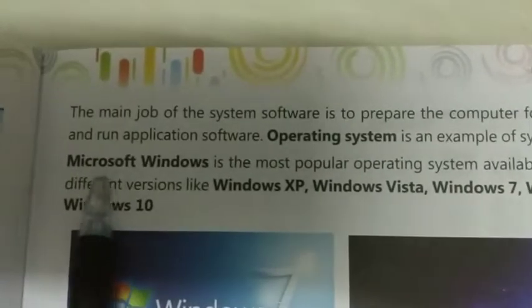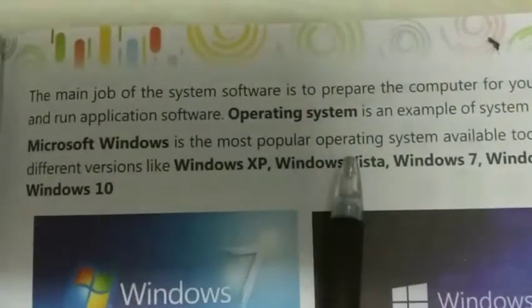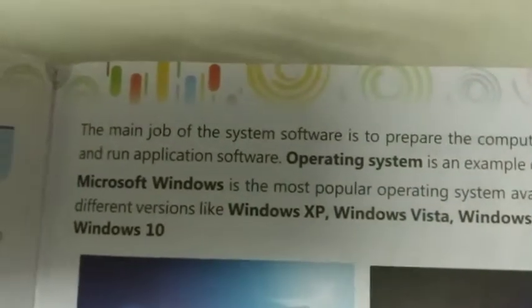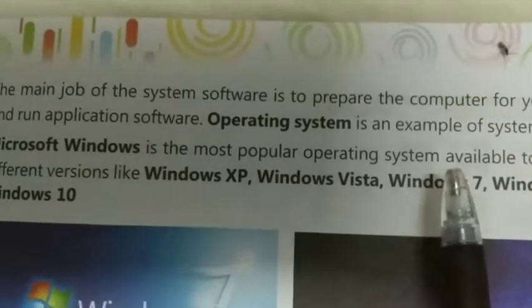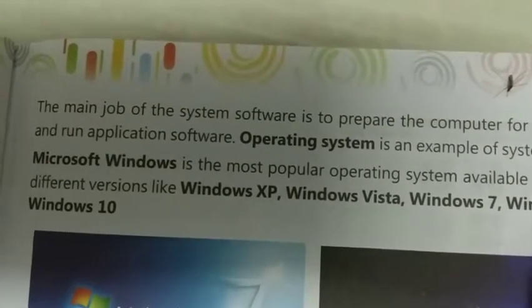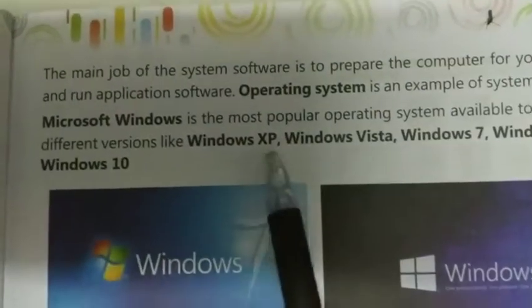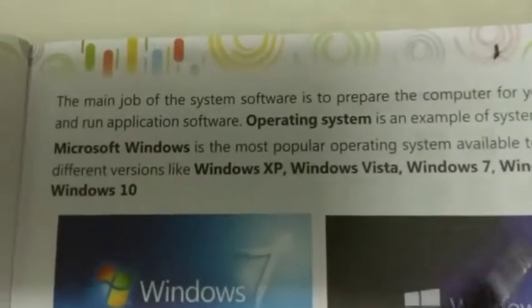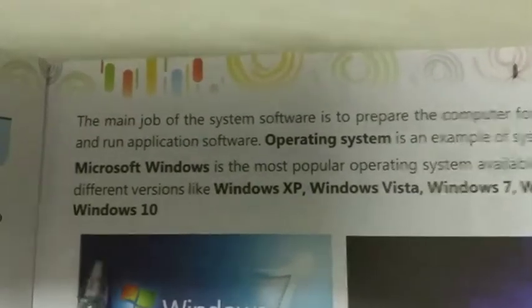Operating system क्या है? System software का एक example है। Microsoft Windows is the most popular operating system available today। Microsoft Windows आज सबसे लोकप्रिय operating system है। It has different versions like Windows XP, Windows Vista, Windows 7, Windows 8 and Windows 10।